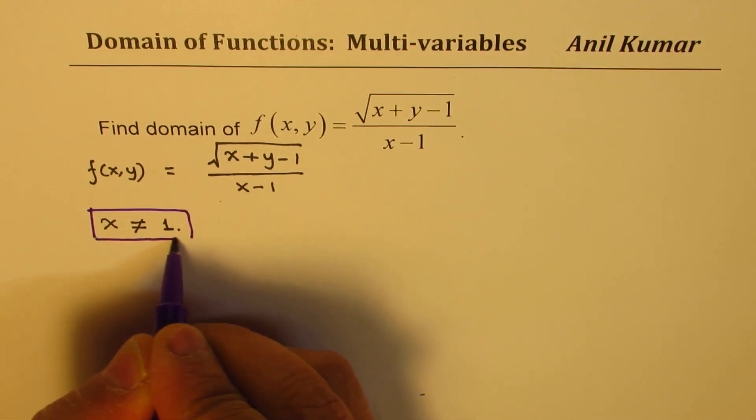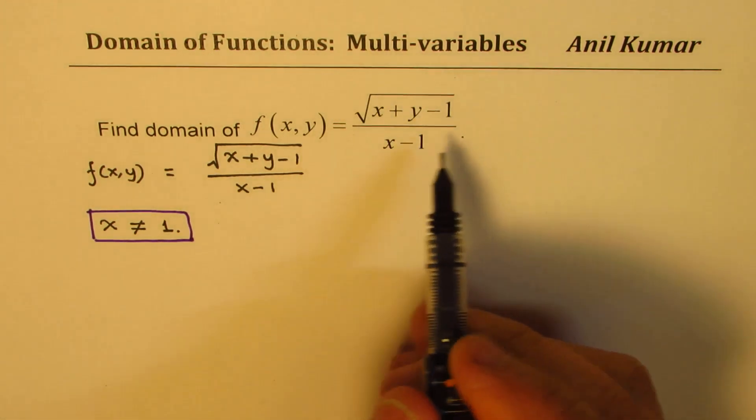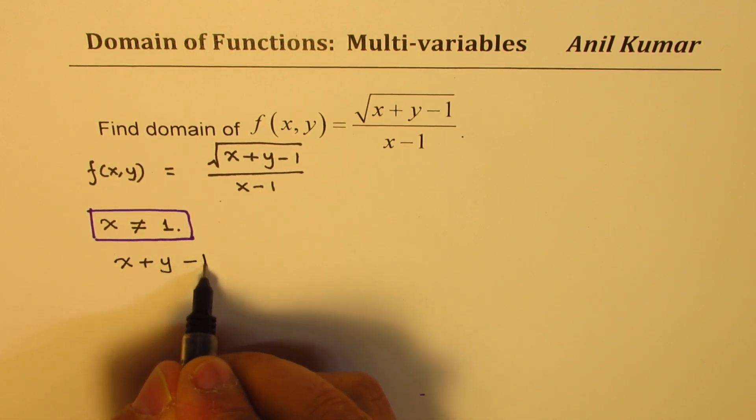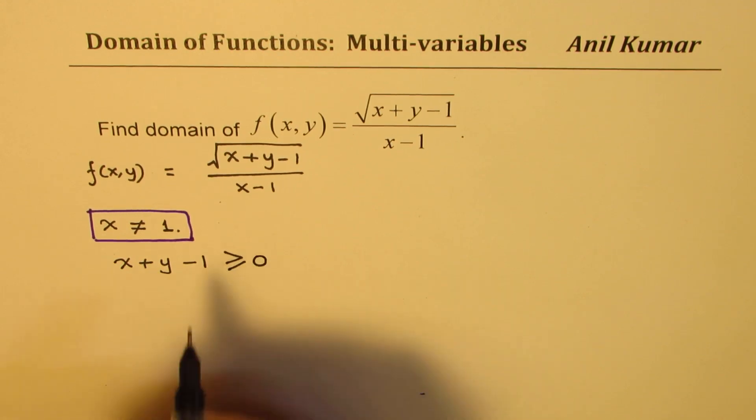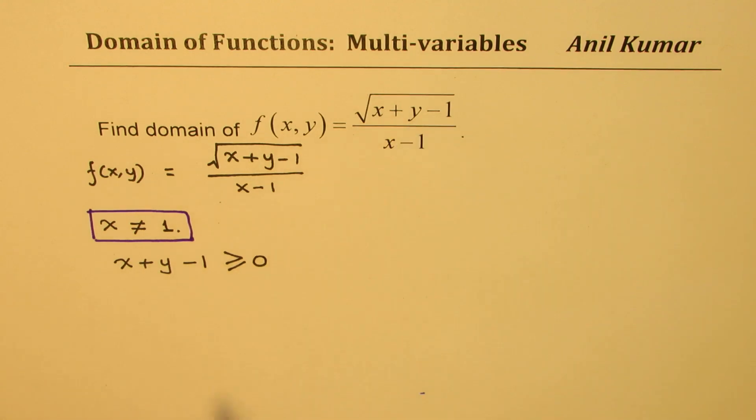Now how do we figure out other restrictions? The other restriction could be because of the square root part. So we know that the value of x plus y minus 1 should always be greater than or equal to 0. That is the second restriction. Because within square root, we cannot have negative numbers.